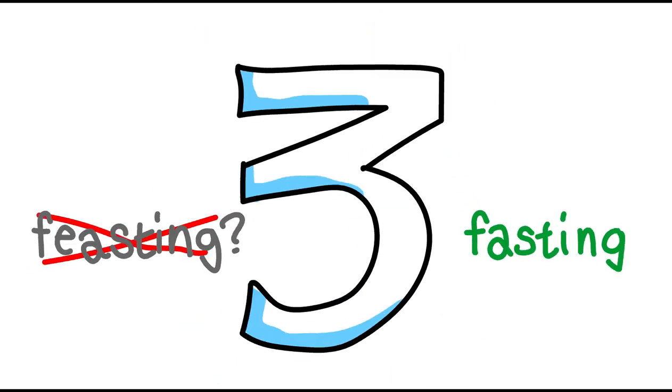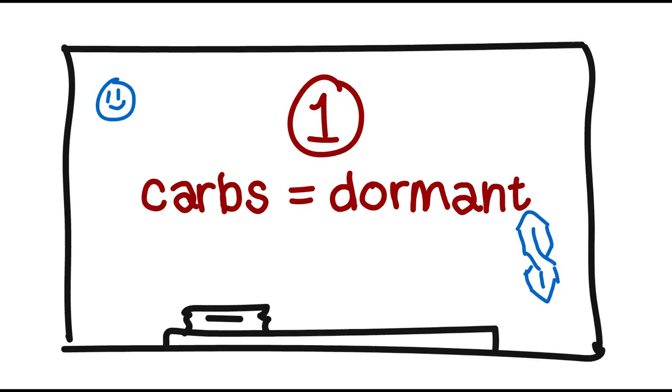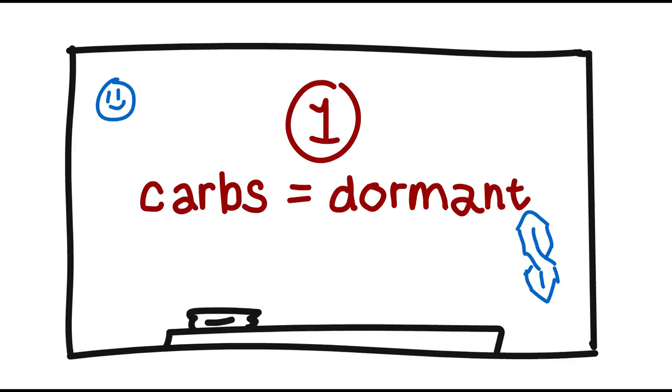But there are three important rules the body uses to keep us functioning in the absence of food, because we've actually evolved to be better at dealing with fasting than we are to feasting. Rule number one, if we're relying mainly on carbohydrates for our fuel, and we eat carbohydrates regularly throughout the day, our fat burning machinery becomes dormant.